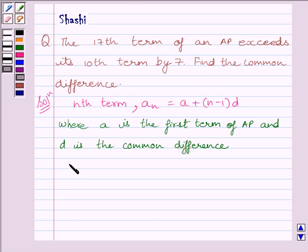Now we can write the 17th term is equal to A plus (17 minus 1) multiplied by D, or we can write A17 equals A plus 16D.